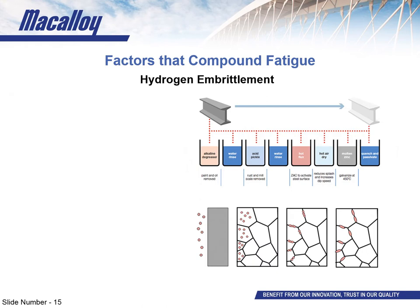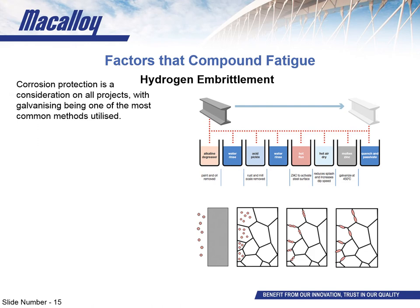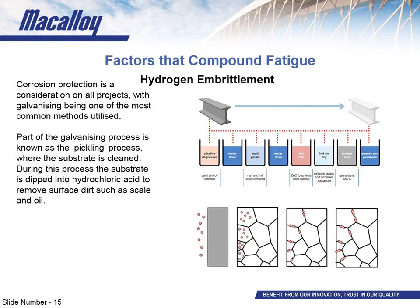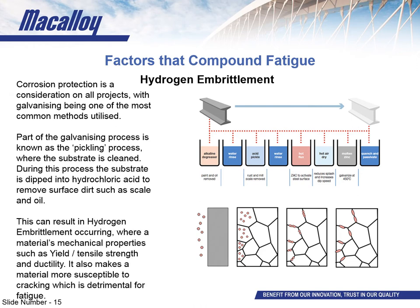Another material factor to account for in fatigue is the potential for hydrogen embrittlement. Corrosion protection is needed on site, and galvanizing is the most common method for steel. However, the galvanizing process includes a pickling step — essentially an acid cleaning of the substrate — which typically uses hydrochloric acid. Being hydrogen-based, this acid introduces hydrogen into the steel matrix. The hydrogen diffuses towards grain boundaries and bonds with carbon in the steel to form methane. This methane is immobile within the material, and as more is created it generates enormous pressure, altering mechanical properties such as ductility, yield strength, and tensile strength, and making the bar more brittle — which is detrimental to fatigue resistance as it makes cracking more likely.